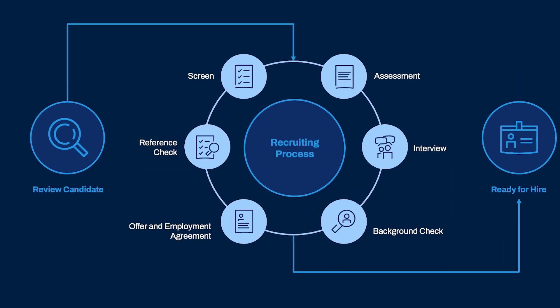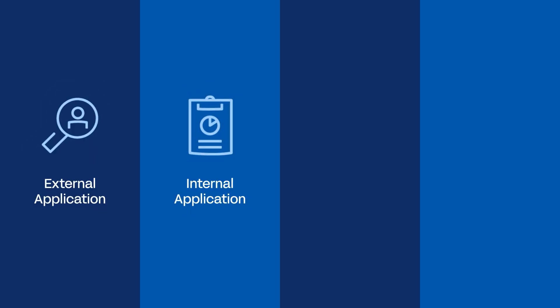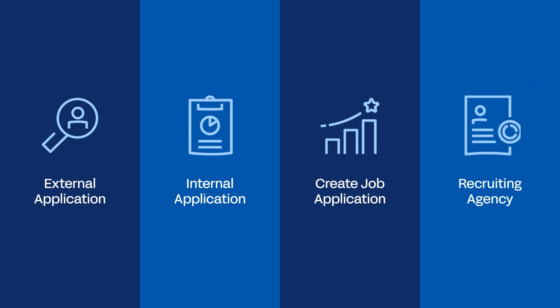Let's review the framework, starting with the initial step: Review Candidate. Every job application business process will begin with the Review Candidate step. During this first step, you decide whether or not to consider the candidate for the job. There are four ways to initiate the job application business process: an external candidate can apply, an internal candidate can apply, someone can create a job application for a prospect, and an agency can submit a candidate. Depending on the setup, your process may allow routing of multiple review steps to different members of the hiring team.